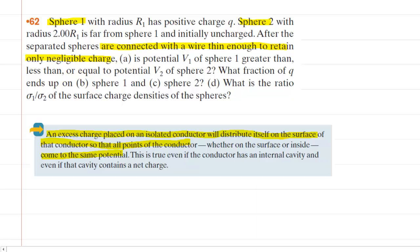In part A, when they ask us, is potential V1 of sphere one greater than, less than, or equal to the potential V2 of sphere two, the answer will be that they are equal according to the theorem that we just highlighted. Again, they're connected by a wire, so you can treat them as a single conductor. The charge will distribute itself so that all points of the conductor come to the same potential. So the answer to part A is that the potentials will be equal.